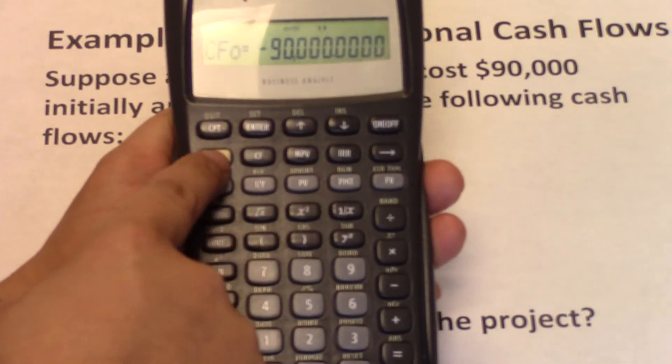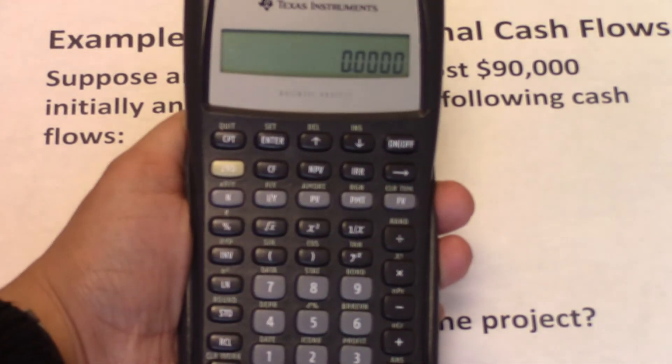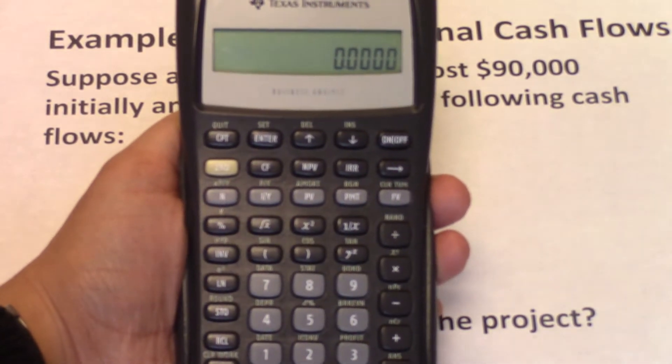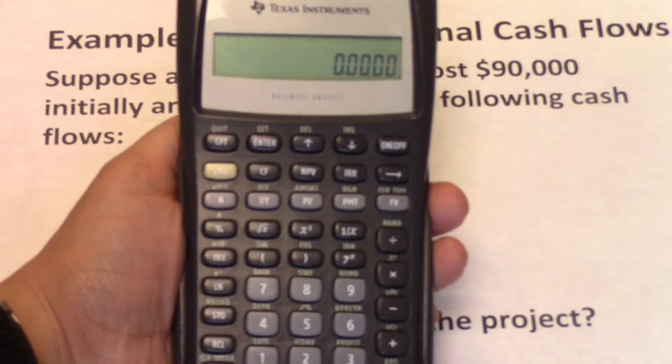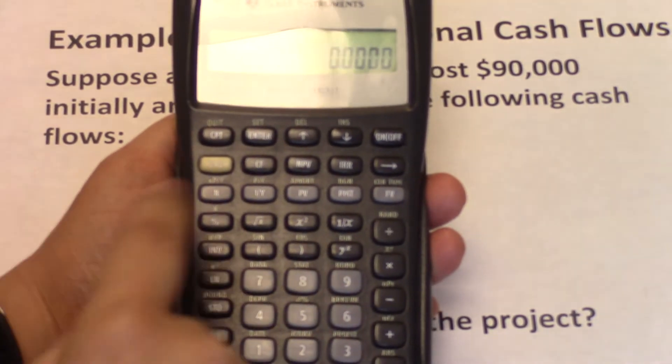So you do CF, second, CEC. Now all of the cash flow inputs that we have done before are erased. So now we are ready to enter our own cash flows.